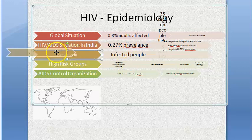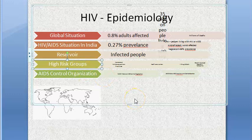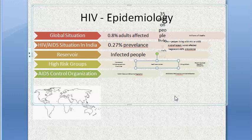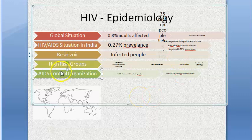The reservoir of HIV is infected people themselves. High-risk groups include homosexuals, people with multiple sex partners such as prostitutes, healthcare workers (at risk from needle-stick injuries or exposure to blood through open wounds), and intravenous drug users who share needles.